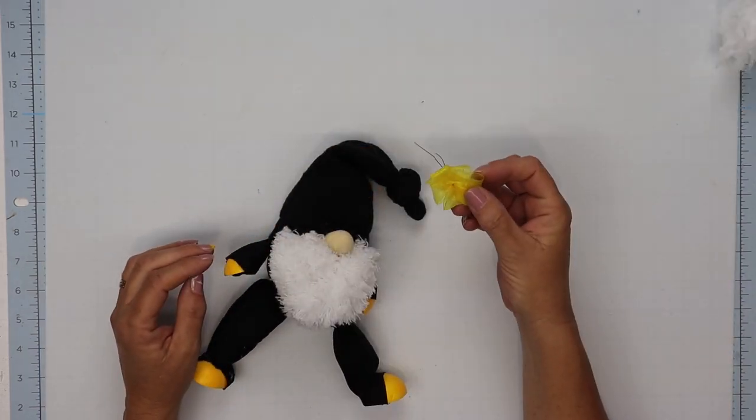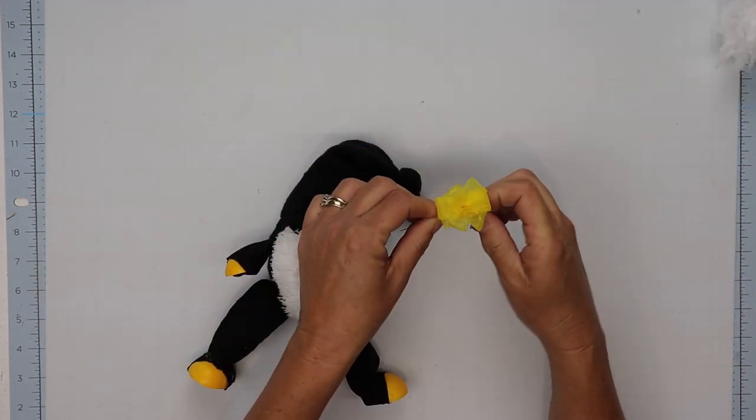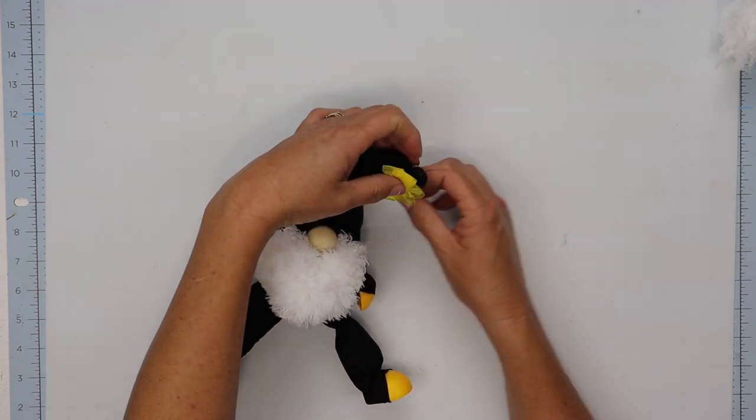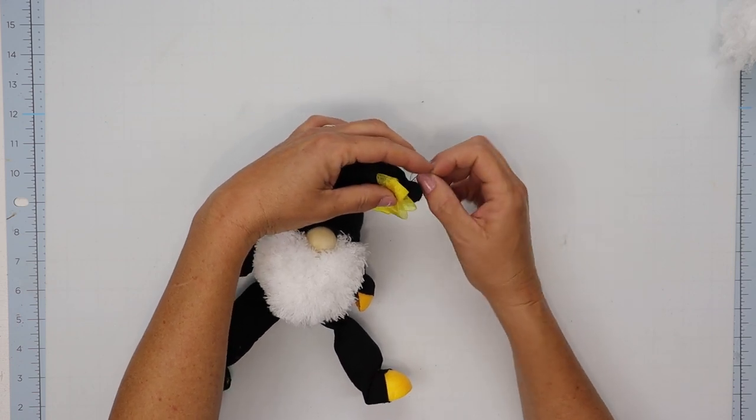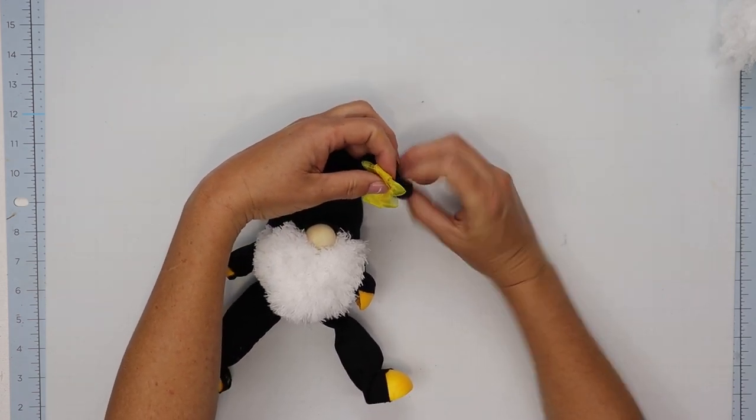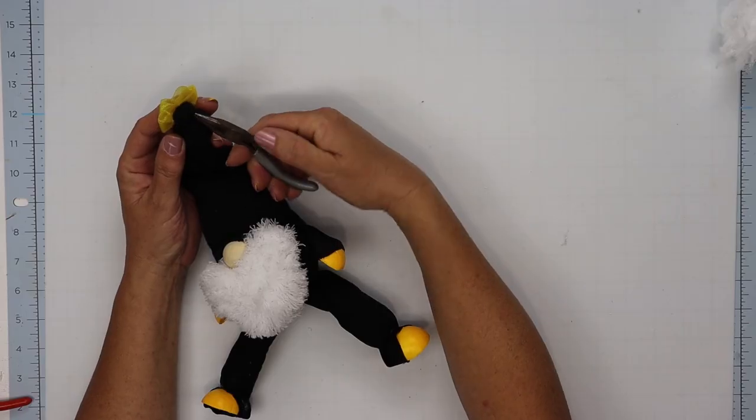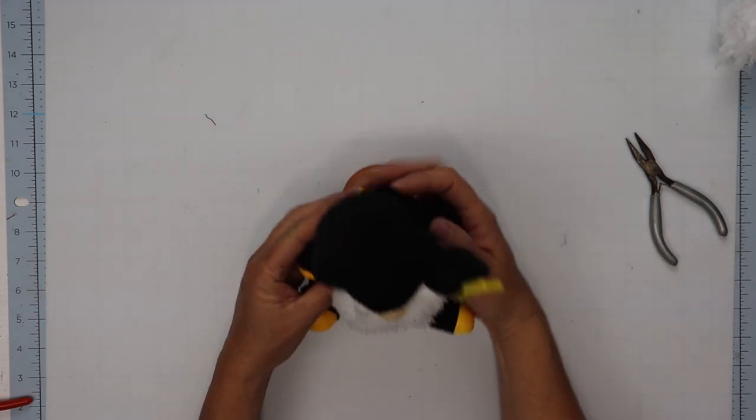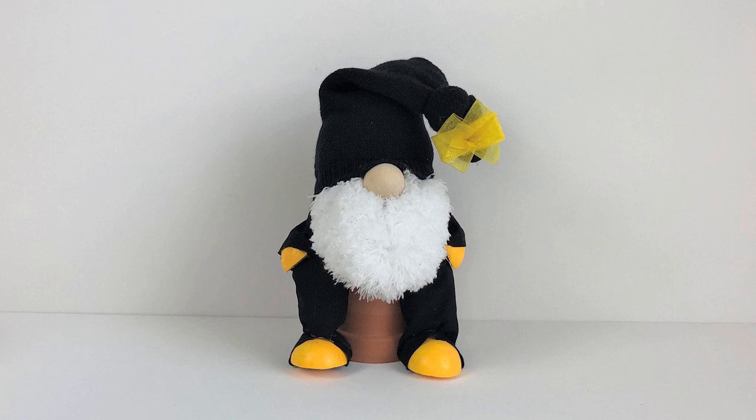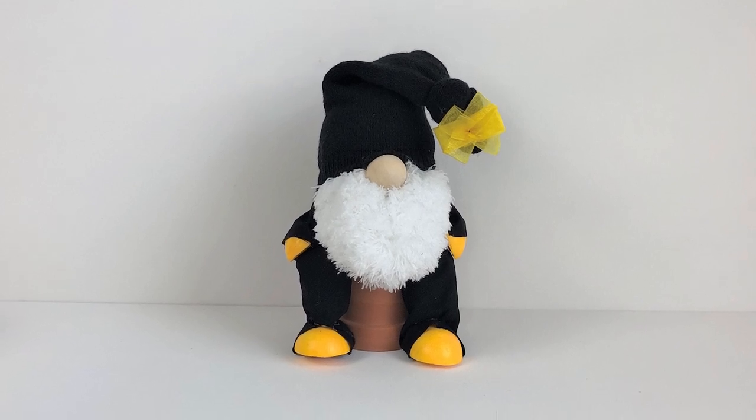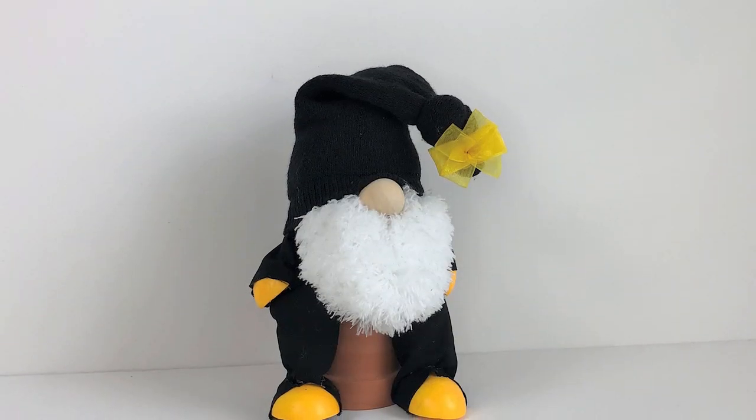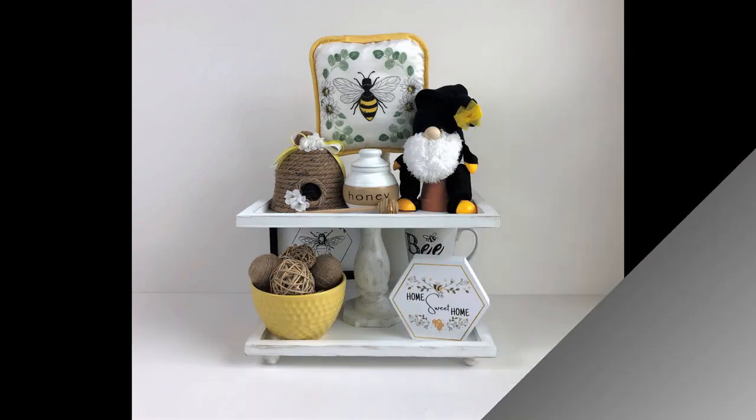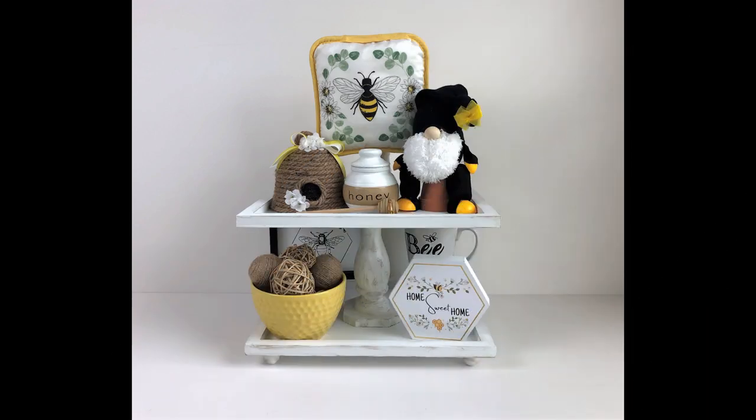Now I created a fold over bow using some Dollar Tree sheer yellow ribbon where you just fold it over and cut slits in the center and then wrap a piece of floral wire around that and then fluff your bow out and then I attach that to the end of the stocking cap with the floral wire. Make sure you cut and tuck that excess wire so you don't hurt yourself and I'm going to sit him right on top of one of Dollar Tree's small terracotta pots and I think he turned out adorable. I think he would have been even cuter if I had a striped sock but either way I think he turned out gorgeous and he looks great on a tier tray.